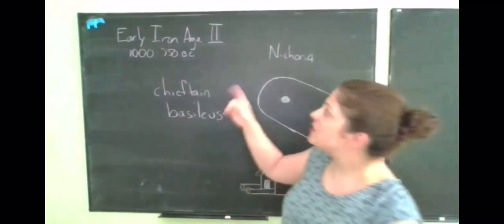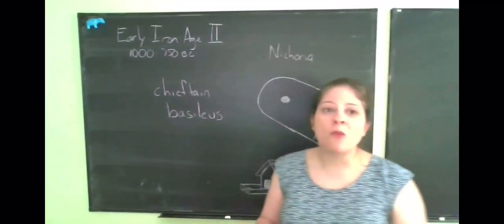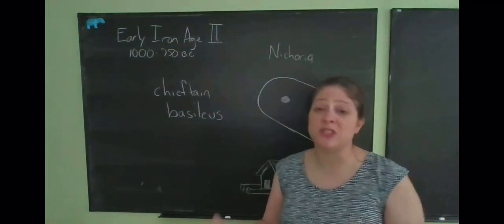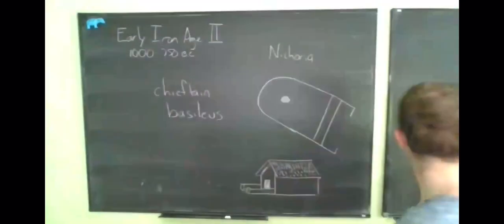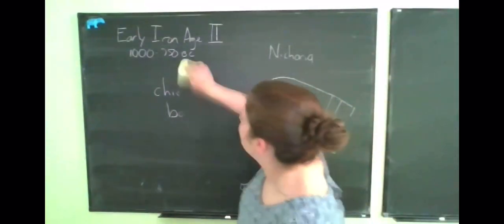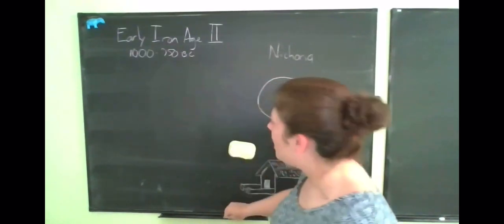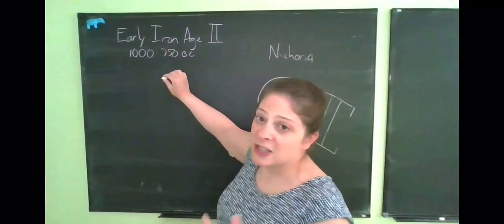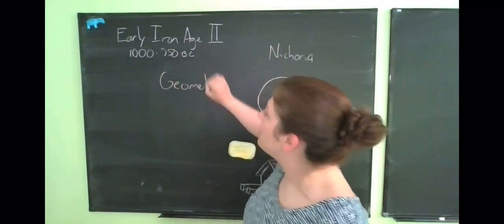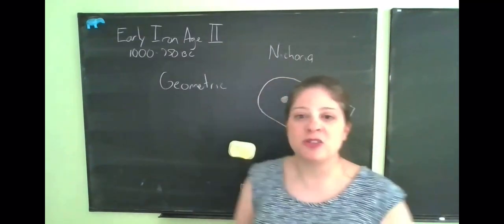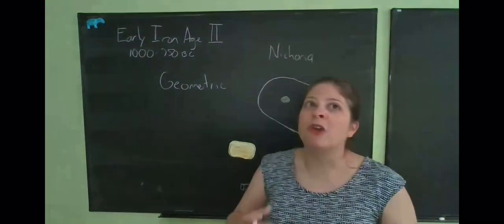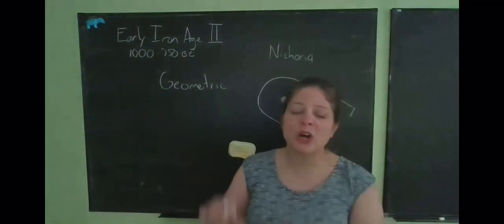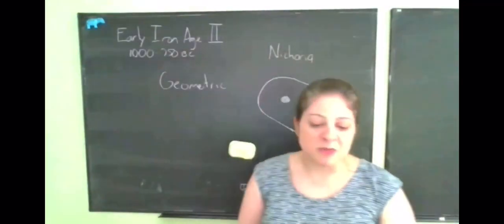So we can say a couple other things about this early Iron Age two period. One is that we do see some increasing material culture, increasing sophistication of material culture. The pottery, for instance, to go find my eraser here. We said that early Iron Age one is defined by the proto geometric pottery. We do see the development by the ninth century BC of what's known as geometric pottery, which shows even greater sophistication. We begin to see a greater range of possible designs. We begin to see animal and human figures. But again, we'll talk about that more when we look at the pottery of this period.